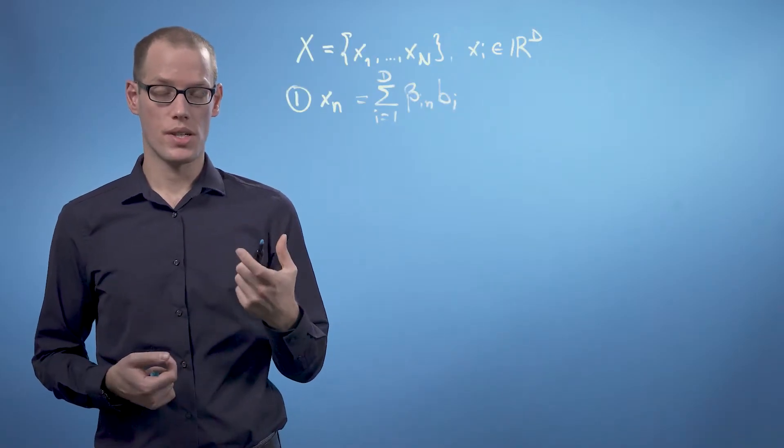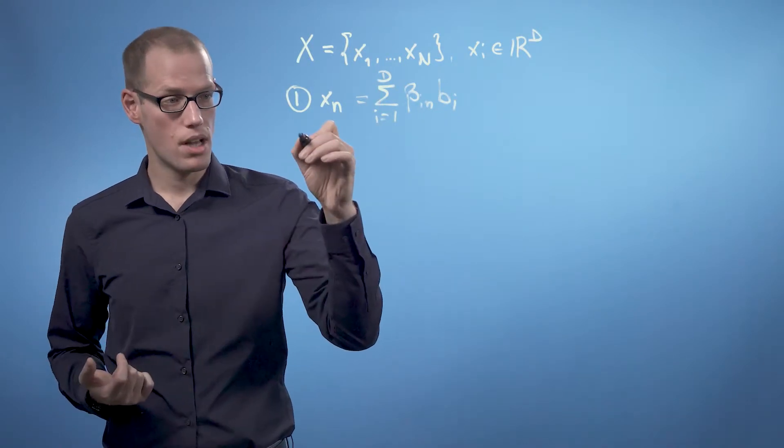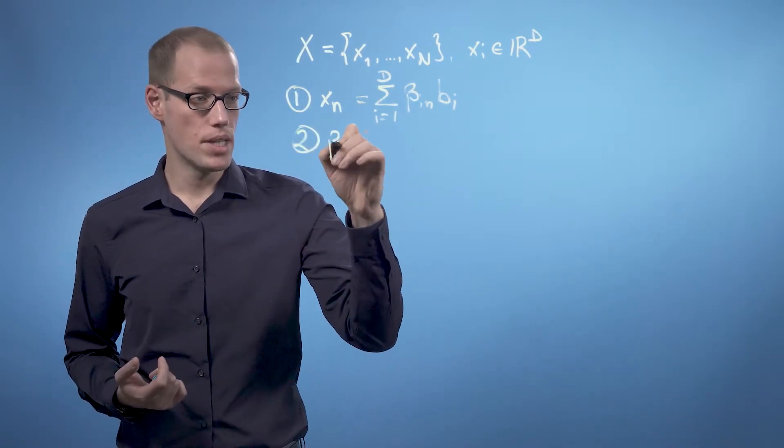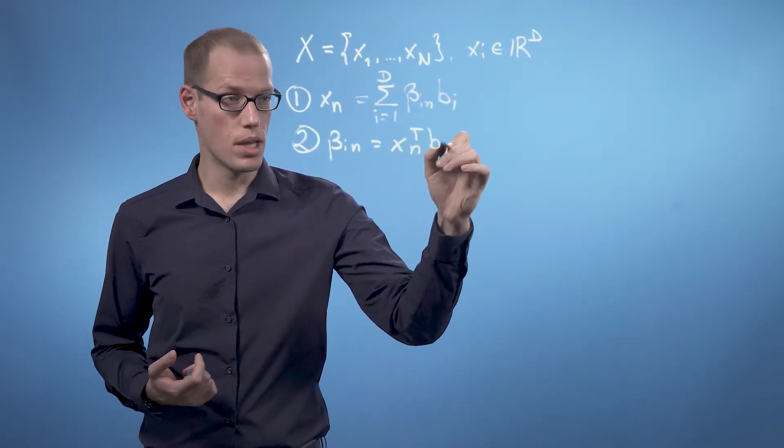If we assume that we use the dot product as our inner product and b_1 to b_d are an orthonormal basis, we can also write beta_in as X_n transpose times b_i.